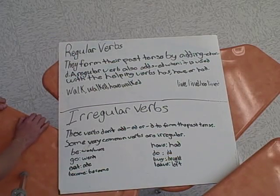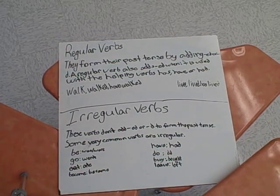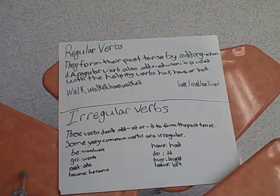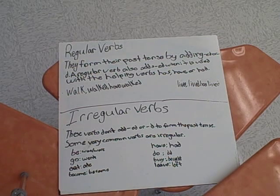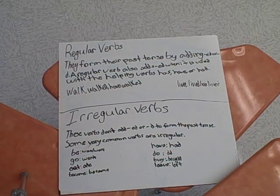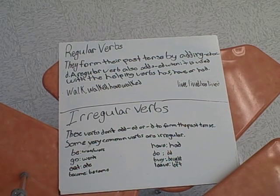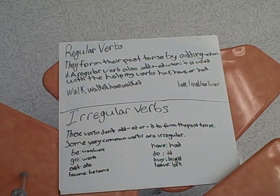This is regular verbs. They form their past tense by adding -ed or -d. A regular verb also adds -ed when it is used with the helping verbs has, have, or had. This is an example of a regular verb.